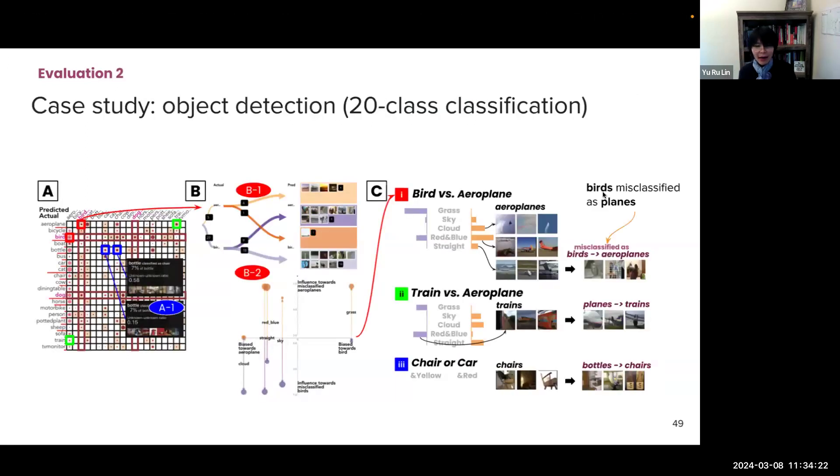So in the more complex object detection test, where there are more than 20 different classes, the system helps the data scientists to identify blind spots. For example, between detecting birds and airplanes, we found that sky, clouds, and red and blue stripes, and stripe patterns, these are biased toward airplanes. And birds tend to misclassify as planes when they have these patterns. So ESCAPE can identify and address blind spots in these multi-class classifications.